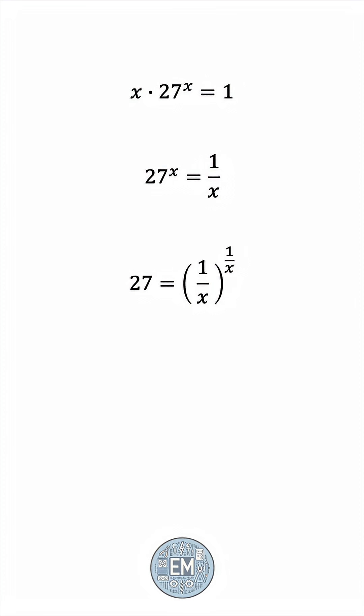And we have 27 equals 1 over x raised to the 1 over x. And we've arrived at the situation we aimed for. Something raised to itself is 27.